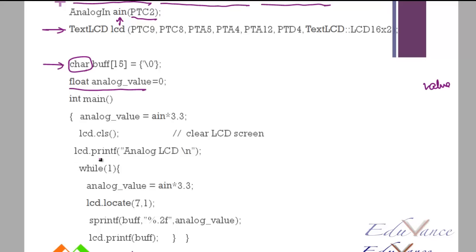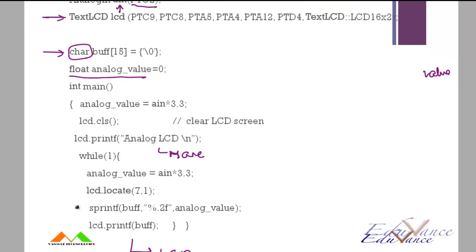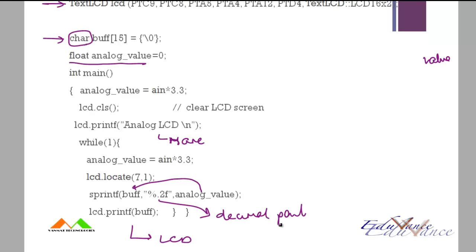After that your PTC9 is your register select. Your read write we connect to ground because we always write into the LCD, we rarely read. Then PTC8 goes to enable, and these are the same connections which is right here. So let's look at the program. We hash include mbed.h, TextLCD.h for the LCD, and stdio.h for printf and scanf commands.